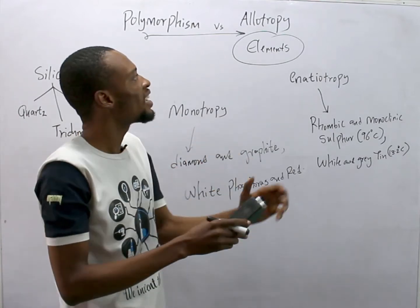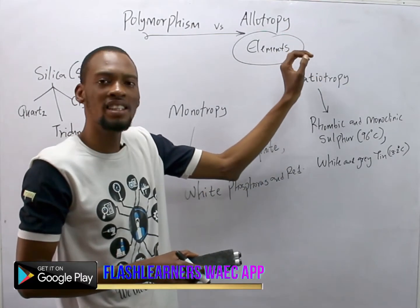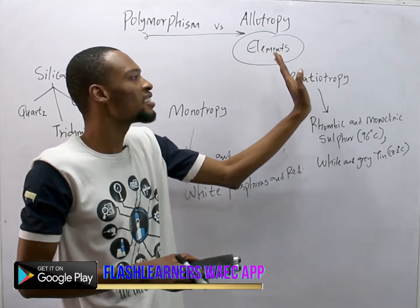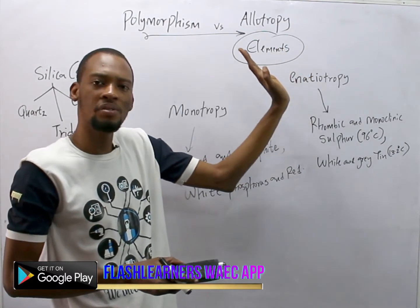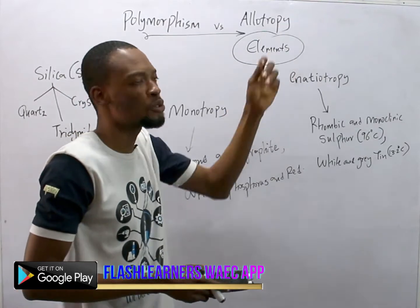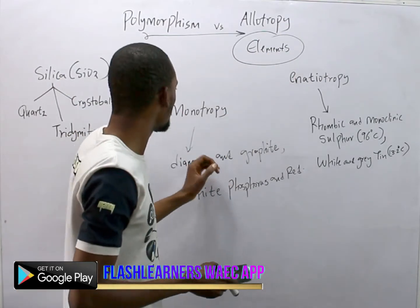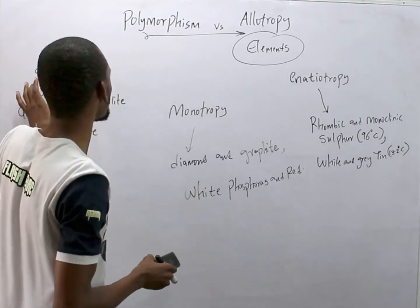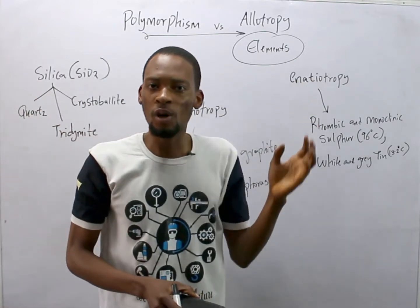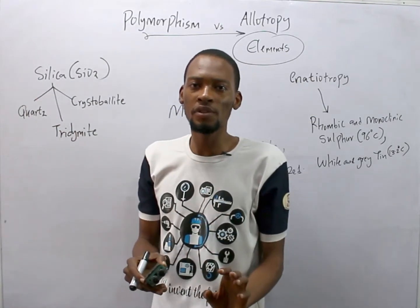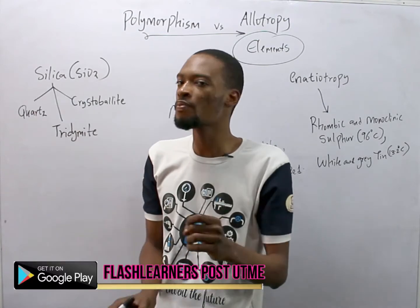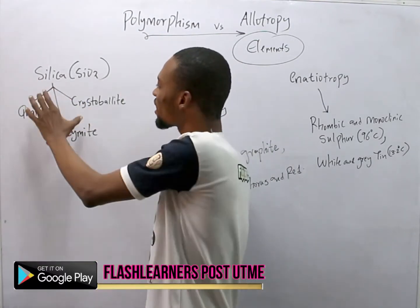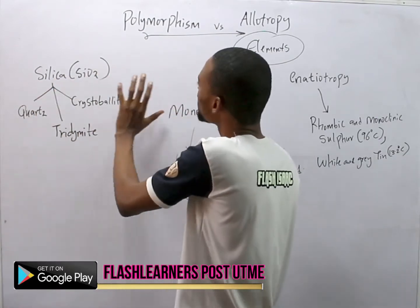Allotropy applies only to elements. So if an element exists in different forms under the same physical state, it is referred to as allotropy. Silica does not exhibit allotropy because, although it exists in different forms under the same physical state, it is not an element — so it is polymorphism, not allotropy.